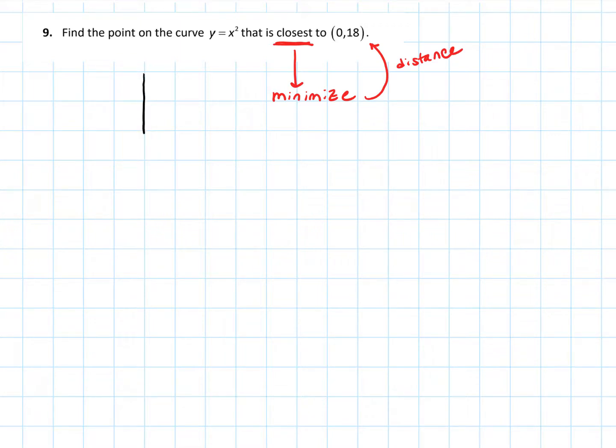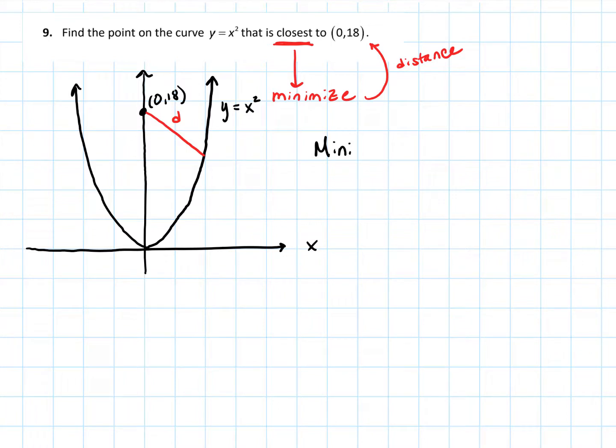This one does lend itself nicely to a picture. So why don't we start with our y equals x squared, which is a parabola. So here is y equals x squared. Let's just assume for purposes of our picture that this is (0,18). And we want to find the point or points, could be more than one point, where this distance D is at a minimum. So our goal is we always try to start off by saying what is it that we're trying to minimize or maximize or optimize?